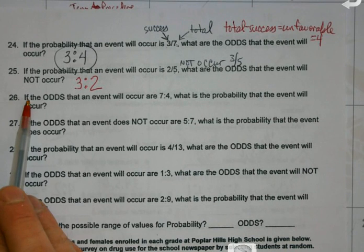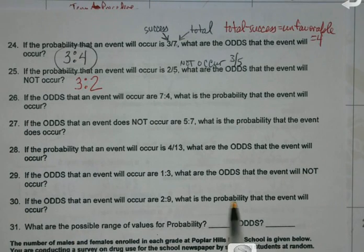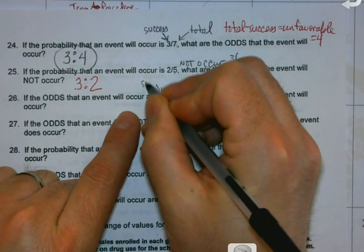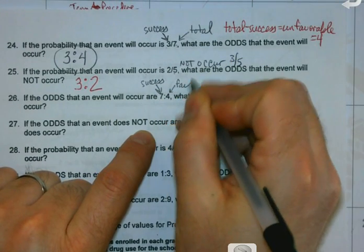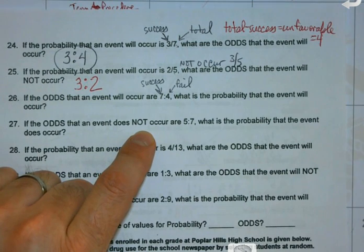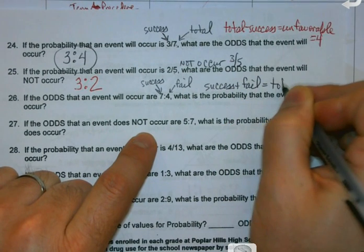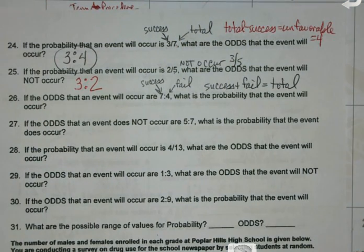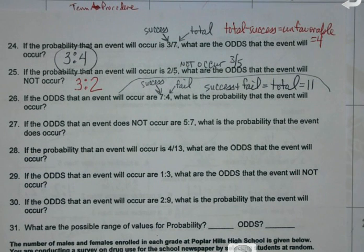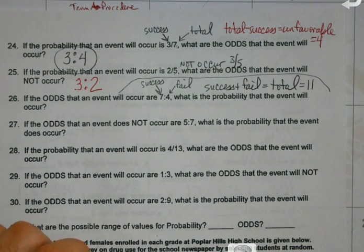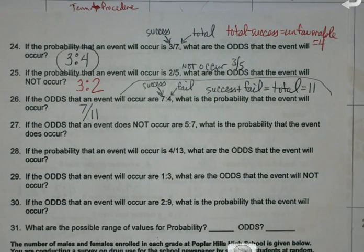What if we reverse it? If the odds that an event will occur are 7 to 4, what's the probability that the event will occur? Because again, my successes are still going to be the same, but if that 4 represents my failures, I would hope you would agree that my successes plus my failures would equal the total number of occurrences. So my total number of occurrences in this case would be 11. So the probability of the event occurring would be my successes, 7, out of the total number of occurrences, 11. So I can go both directions with this.